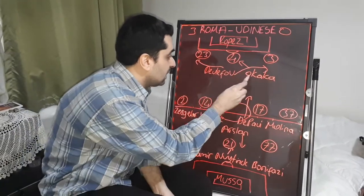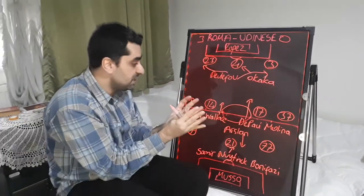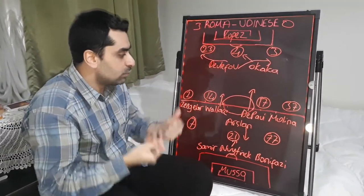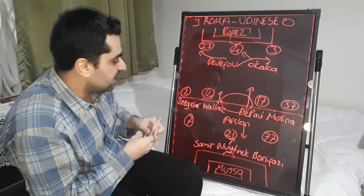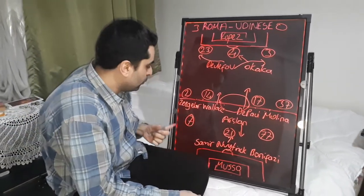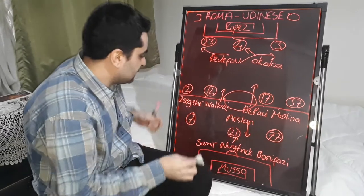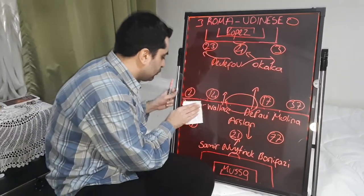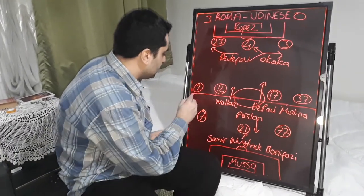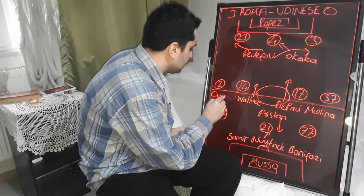Okaka and Derifou played close to each other. Gotti made another substitution: Zegeler came off on the left wing and Oveyan replaced him.